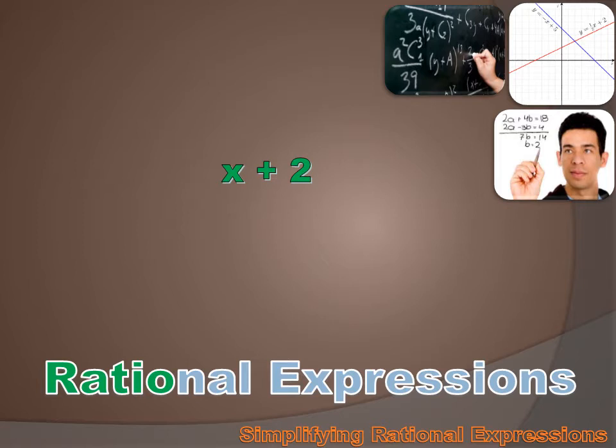x plus 2 is not a ratio, so x plus 2 is not a rational expression. 3 is not a ratio and is not a rational expression. But 3 over x minus 4 is a ratio and it is a rational expression.